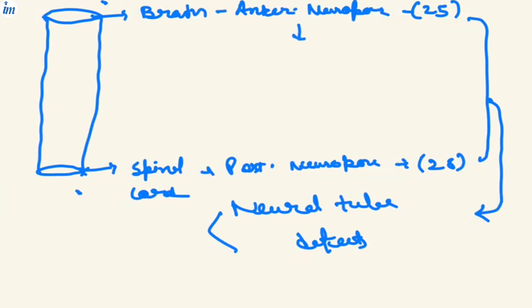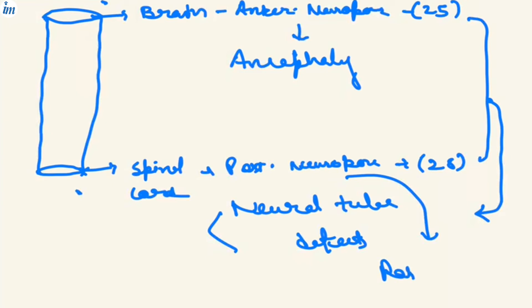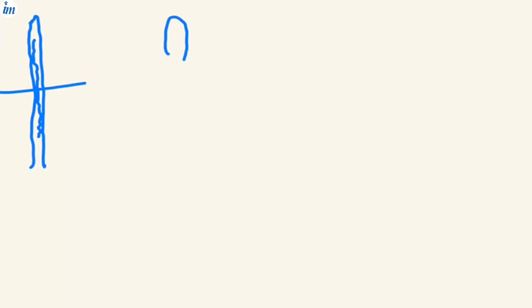Non-closure of the anterior neuropore leads to anencephaly, and non-closure of the posterior neuropore leads to spina bifida. After the neural plate ectoderm we get the neural groove, then the neural tube, and this neural tube starts to form the structures of the brain in the form of vesicles.